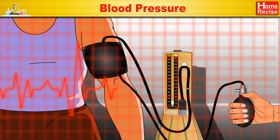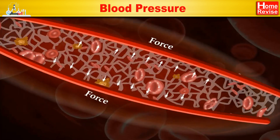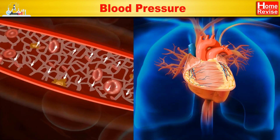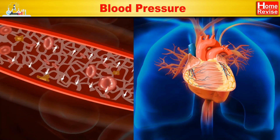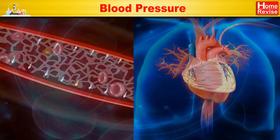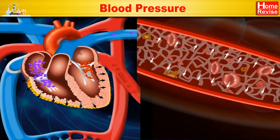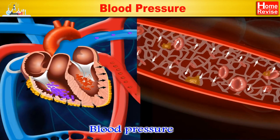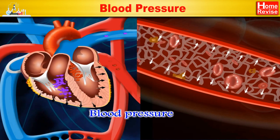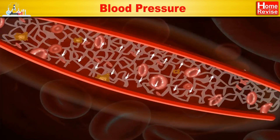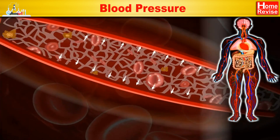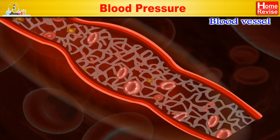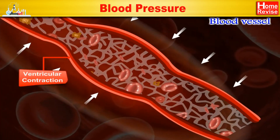Blood is continuously kept flowing through blood vessels due to the contraction and relaxation of the heart. Due to contraction of the heart, pressure is exerted on the walls of arteries, and this is called blood pressure. Proper blood pressure is necessary to supply blood to all parts of the body.